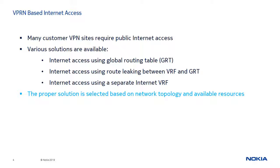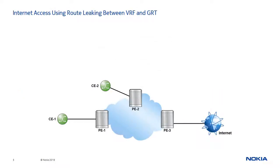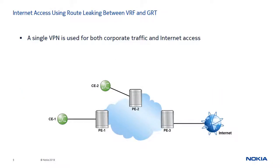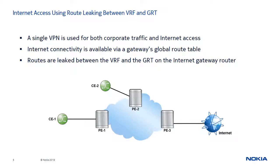The remainder of this presentation will focus on Internet access using route leaking between VRF and GRT. Certain networks require the use of a single VPRN to provide Internet access as well as to maintain VPN connectivity between different customer sites. This is achieved by route leaking between the VRF and GRT.